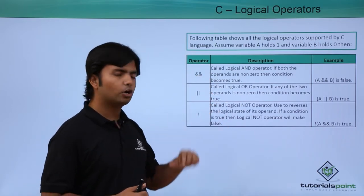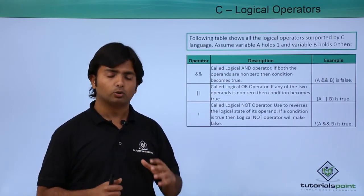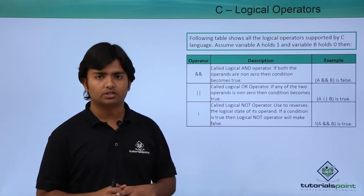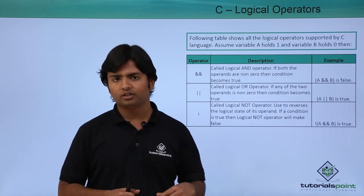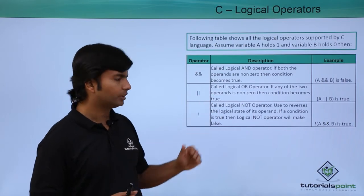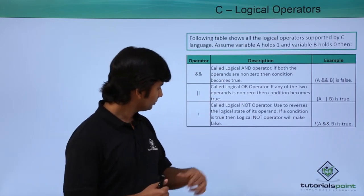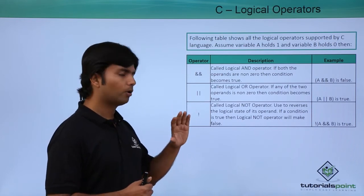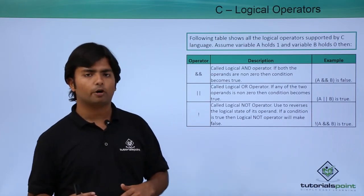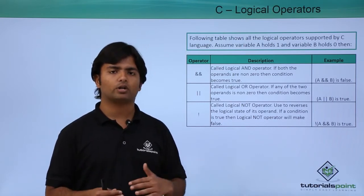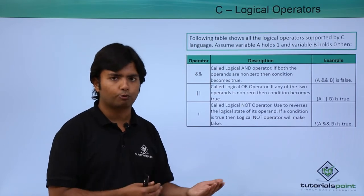Similarly, the OR operator will return false only when both conditions are false. But if any one of the conditions returns true, it will return true — that is, 1. The NOT operator is a unary operator which will simply convert a 0 to 1 (false to true) and true to false.